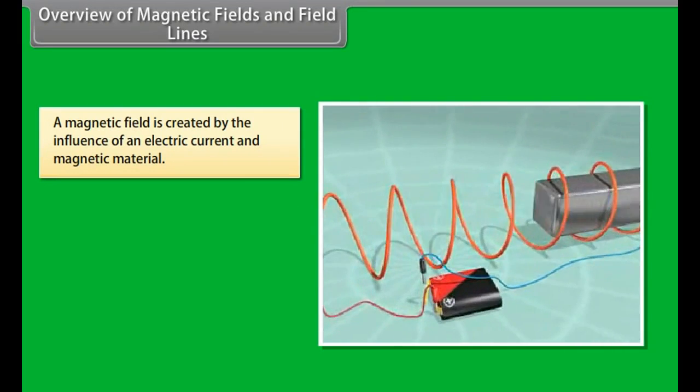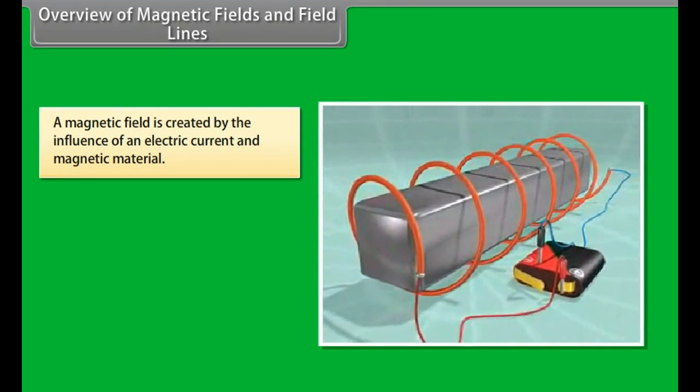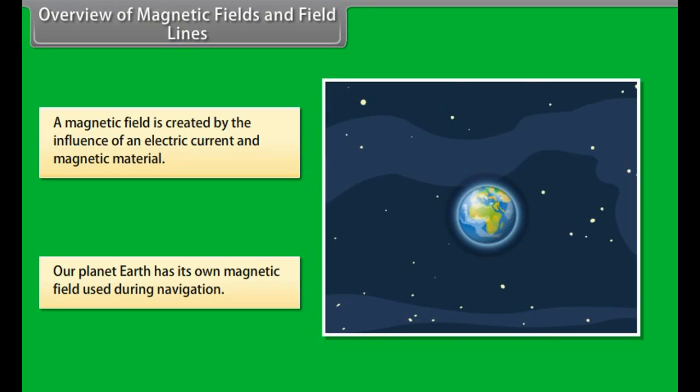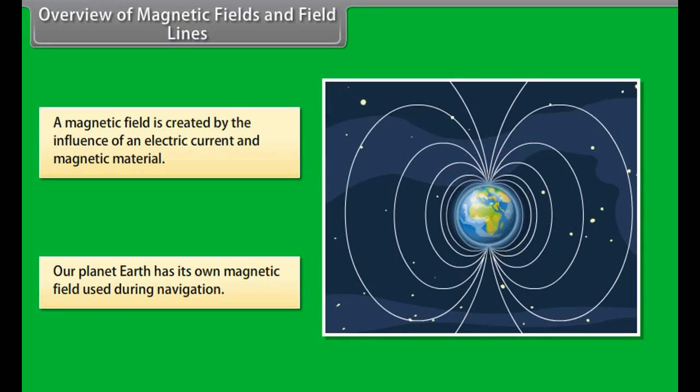A magnetic field is created by the magnetic influence of an electric current and magnetic material. Our planet Earth produces its own magnetic field, which is an important factor during navigation. Magnetic fields are also used in electric devices such as transformers. Magnetic field lines can be compared to the constant altitude lines that are visible on a map.